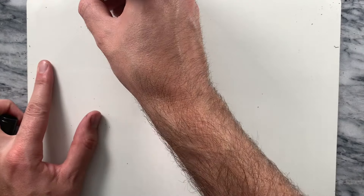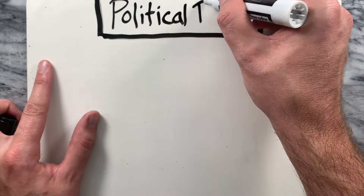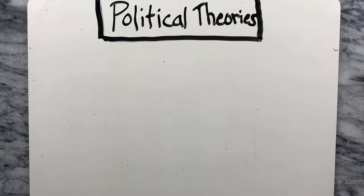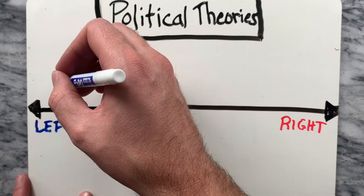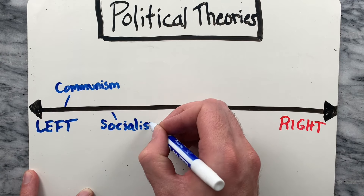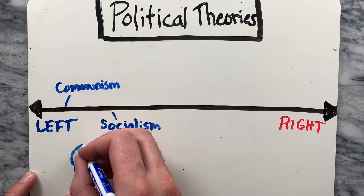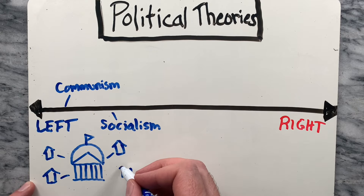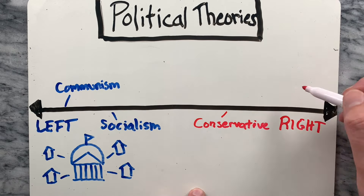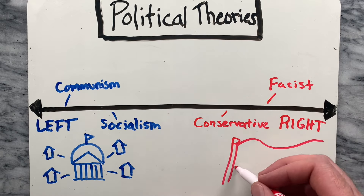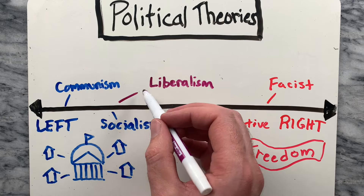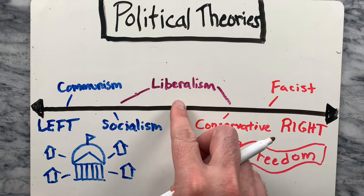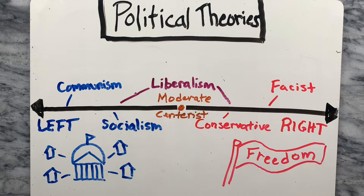Now, let's look at some political theories and where they sit on the left-right spectrum. Political theories like communism and socialism would be placed in differing degrees on the left because they support social organization that is owned or regulated by the community or government. Conservative and fascist theories are typically regarded as being on the right because they support varying degrees of nationalism and independence. Liberalism can mean different things in different contexts, with social liberalism on the left and conservative liberalism on the right, and those in the middle are classified as centrists or moderates.